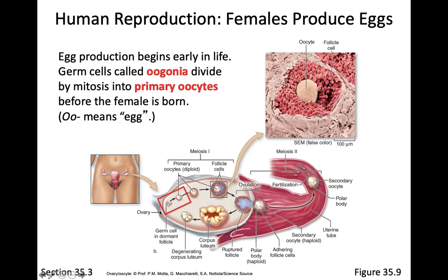Inside your ovaries, you have little germ cells ready to produce your eggs. Once you hit puberty, those germ cells become active and divide into a primary oocyte. This process forms something called a follicle, which contains an egg. Unlike sperm where you get four sperm cells, with eggs you get one egg and three polar bodies — three little non-functional eggs. This is because eggs need to be really large, containing lots of DNA, mitochondria, and cytoplasm to build a baby. The three polar bodies are discarded.